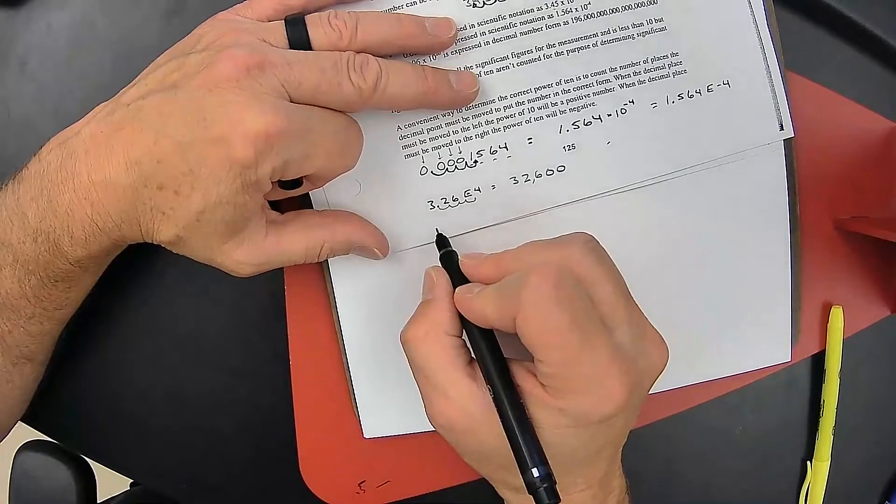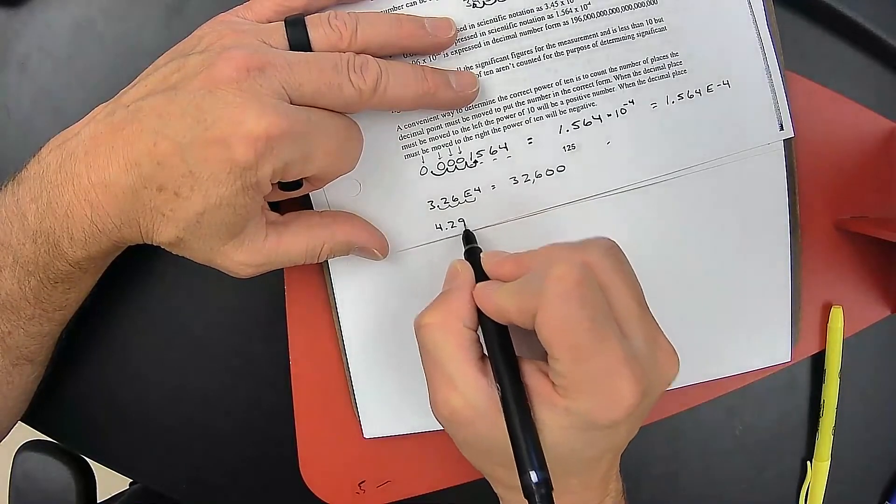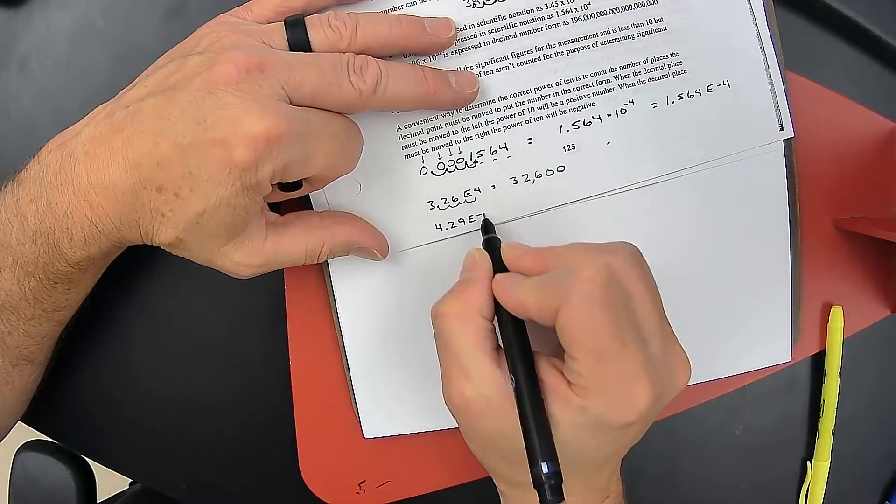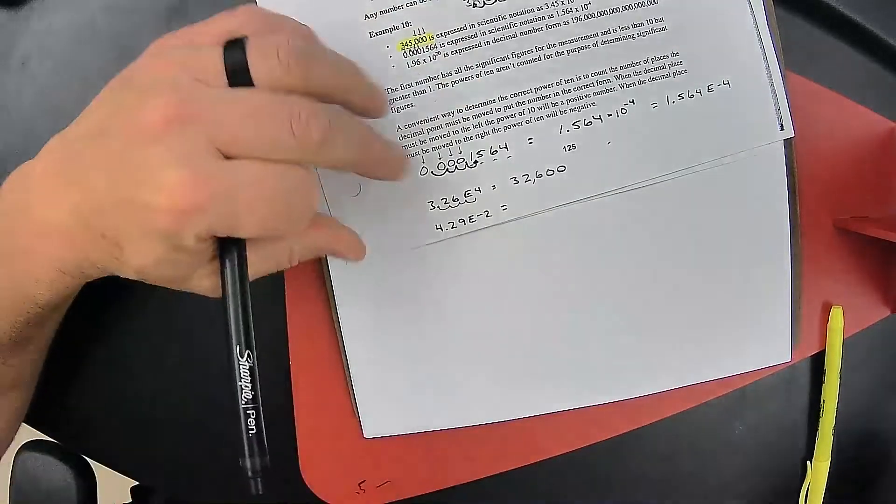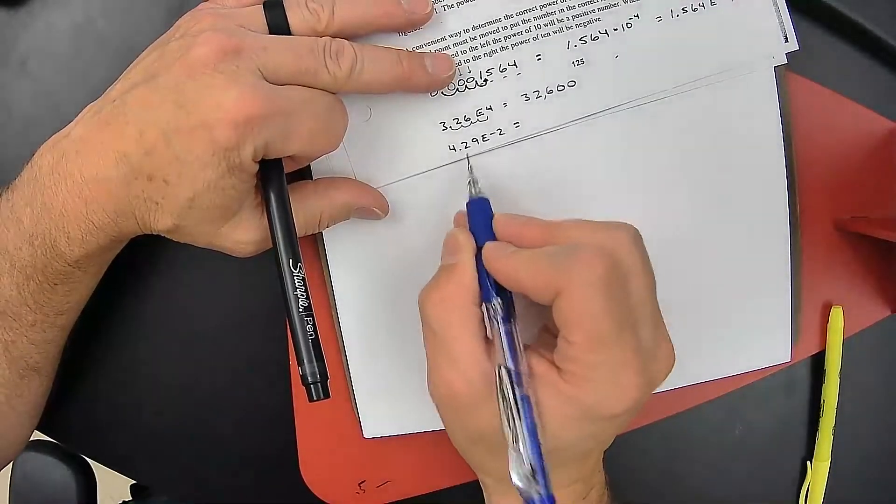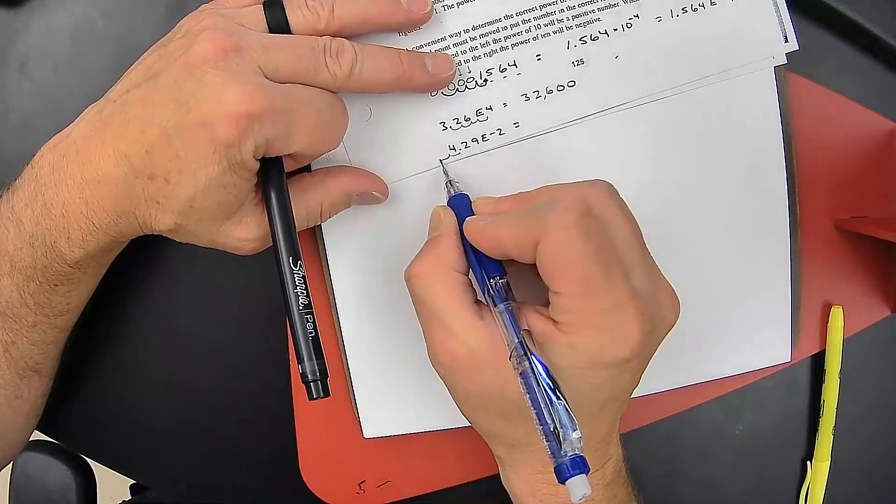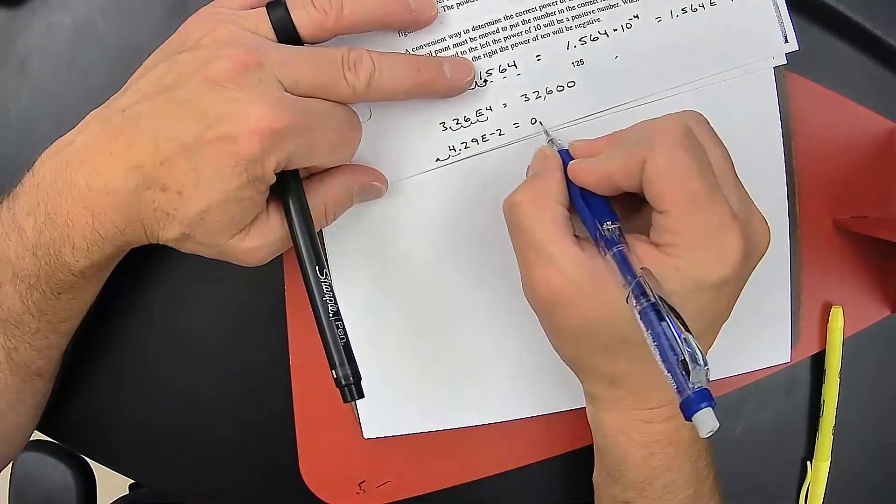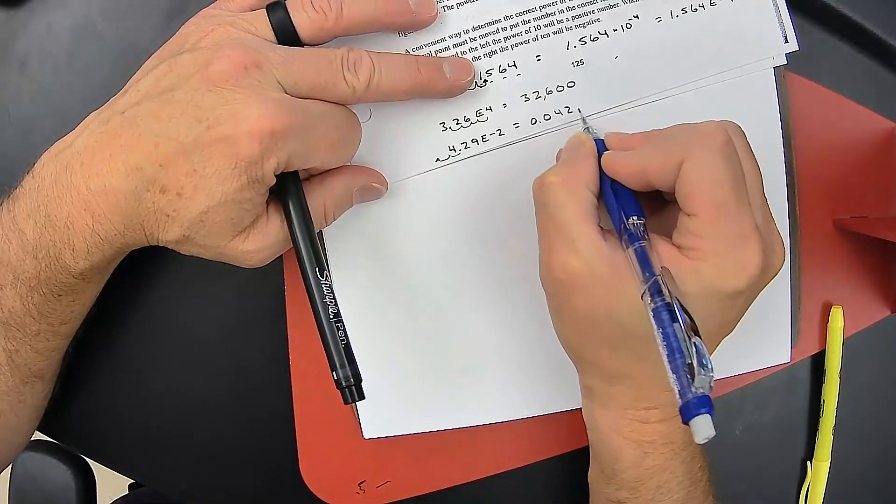Or if we have 4.29 E to the negative two, that means that E to the negative means this is going to get less than one. And I'm going to move it one, two places. So we end up with 0.0429.